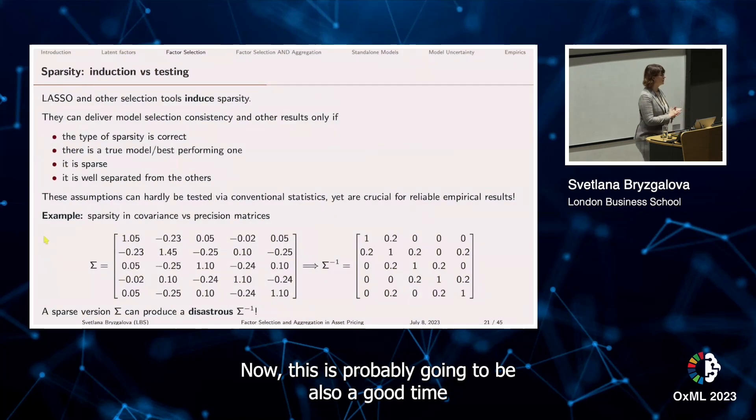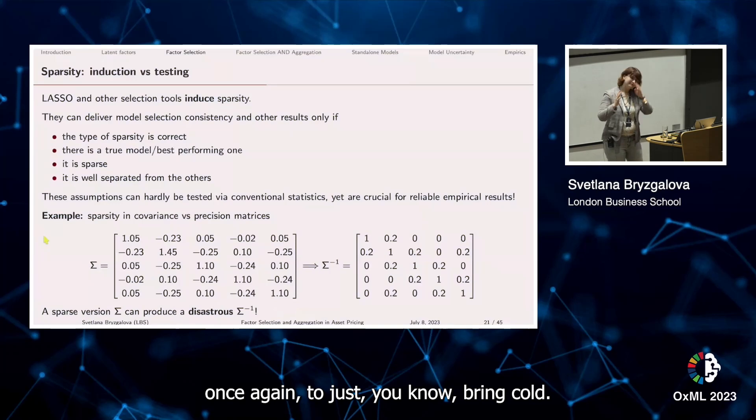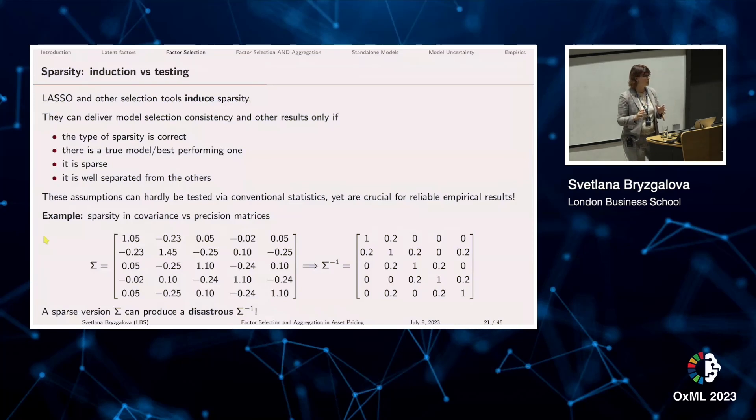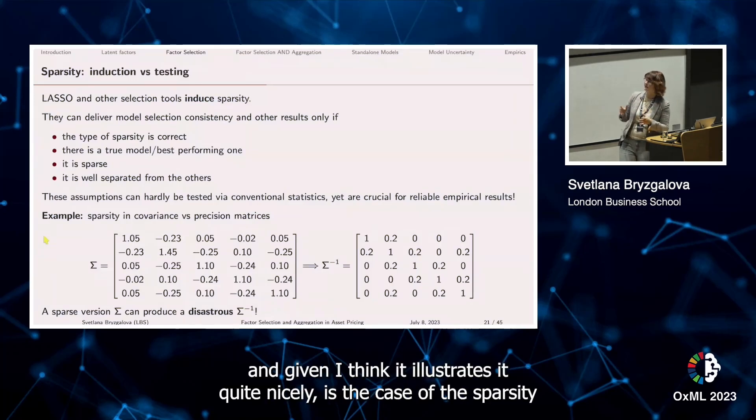This is probably going to be also a good time once again to bring forth this idea that the location of sparsity matters. One example that I always have in mind, and I think it illustrates it quite nicely, is the case of sparsity in covariance versus precision matrices.